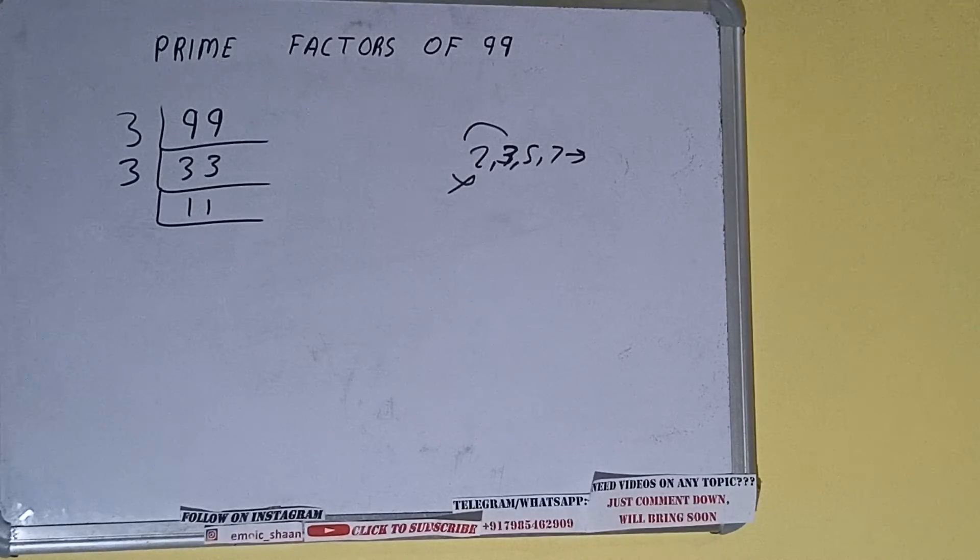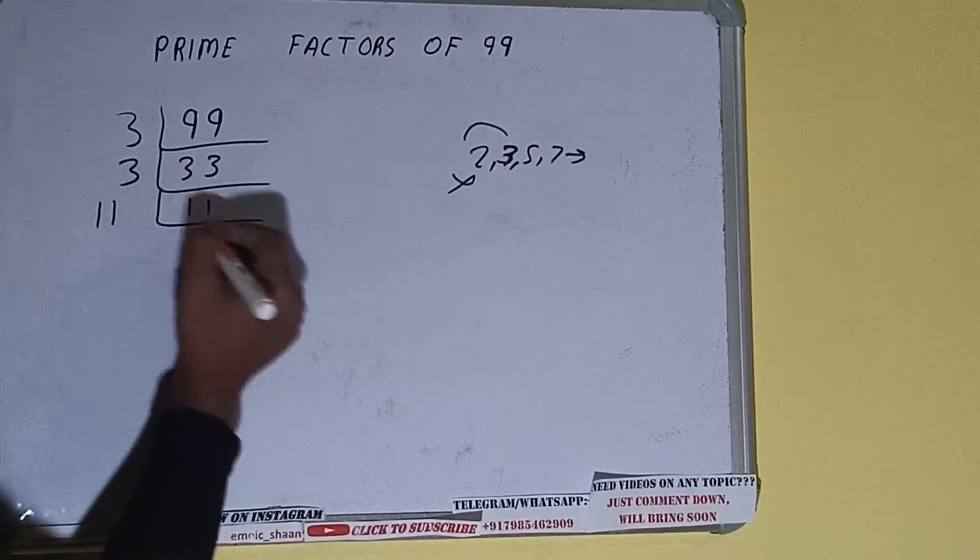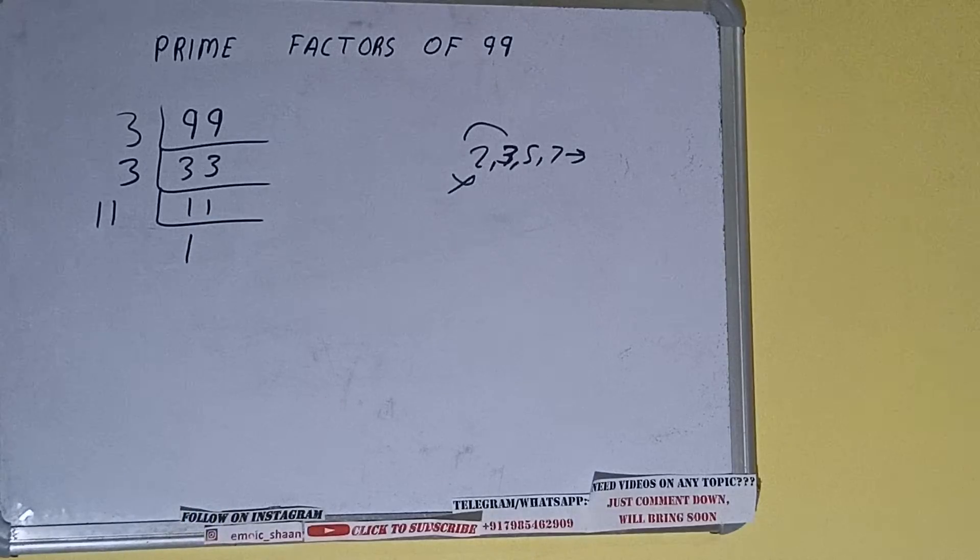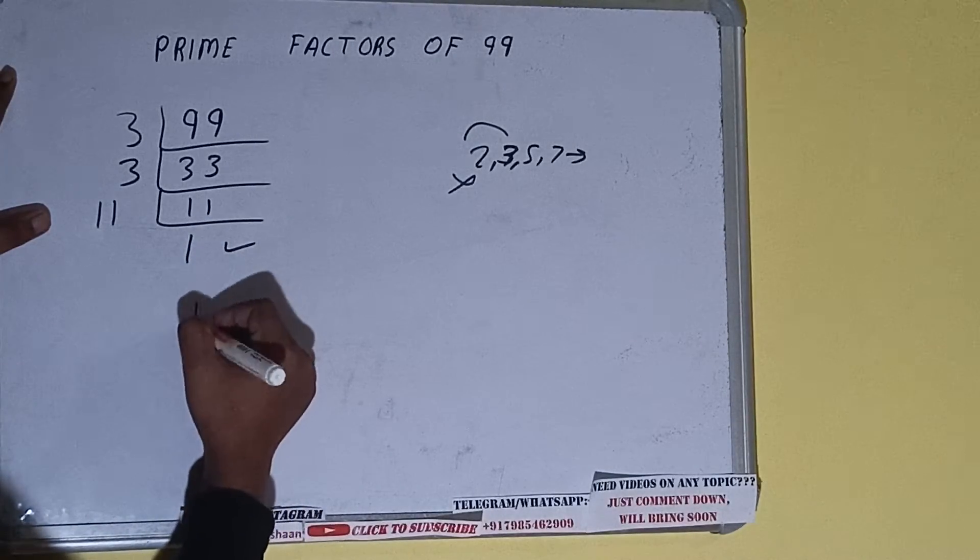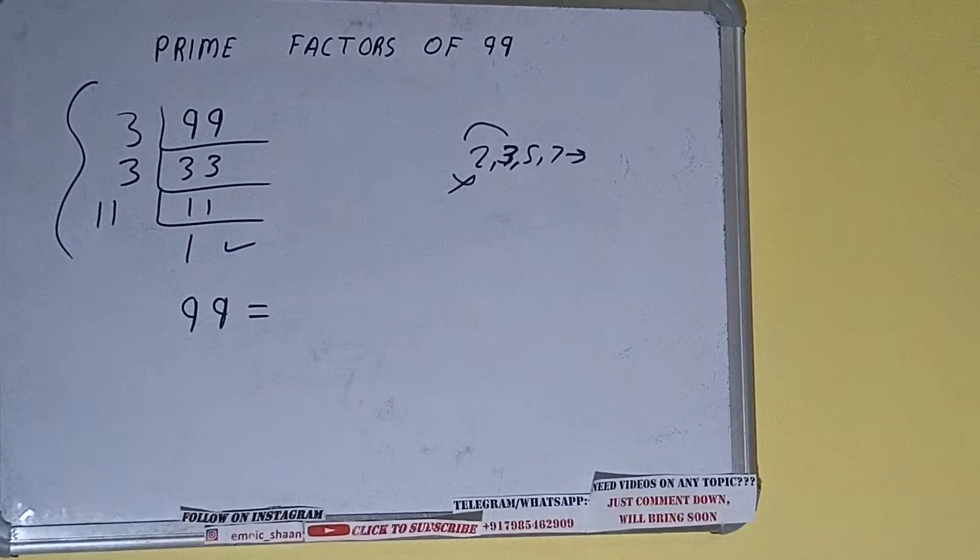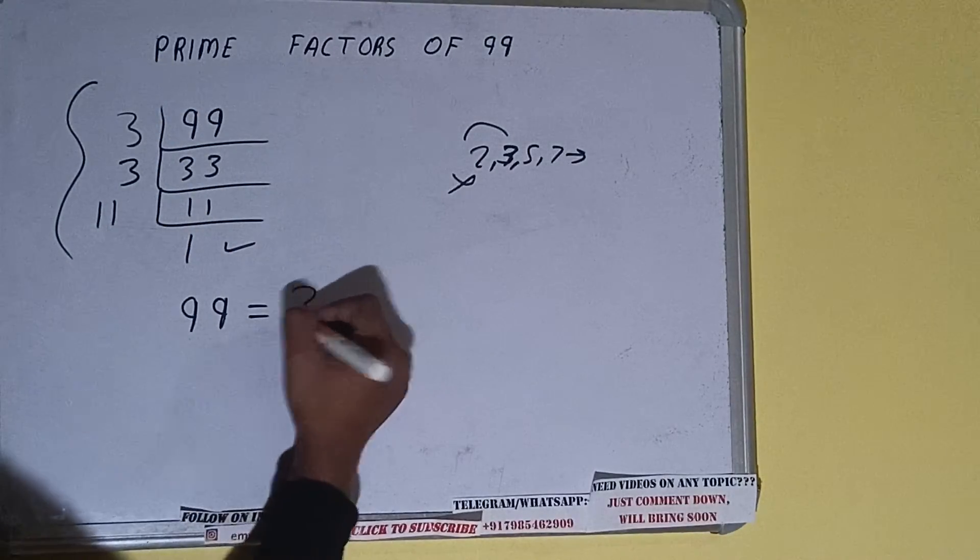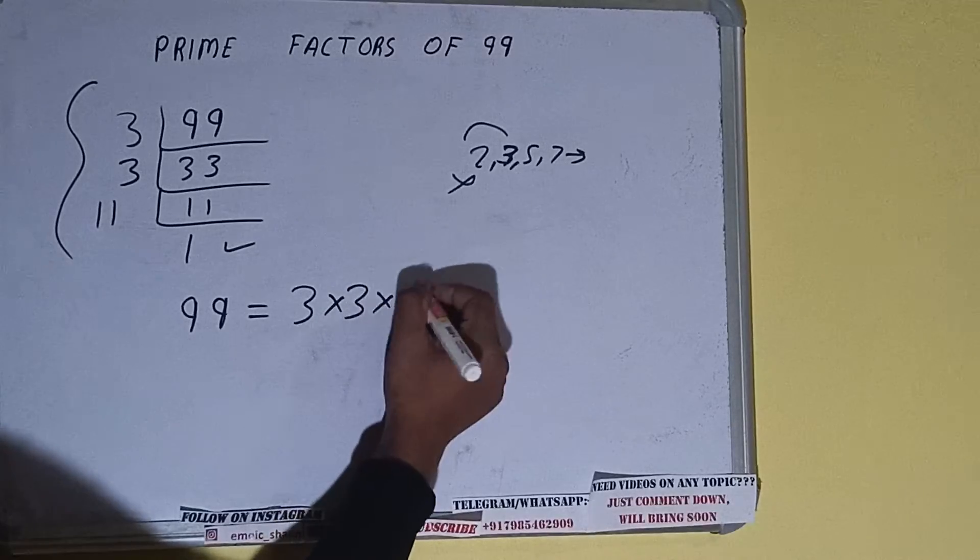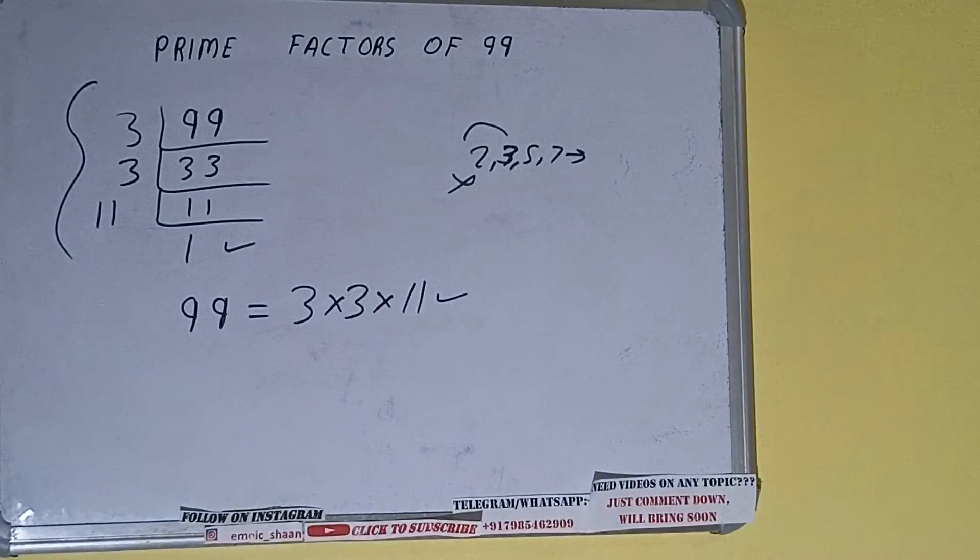divisible by itself, that is 11. And once we do so, we'll be getting one. Once we get one, we need to stop and do one last thing. That is, prime factors of 99 equals multiply whatever we have on the left-hand side, that is 3 × 3 × 11. That will be the answer.